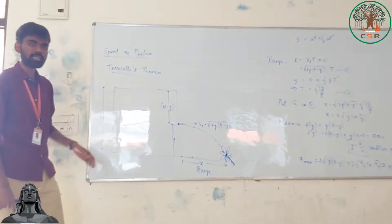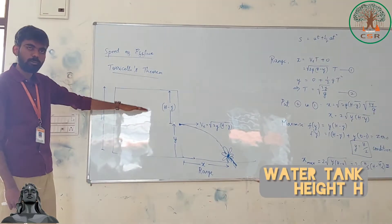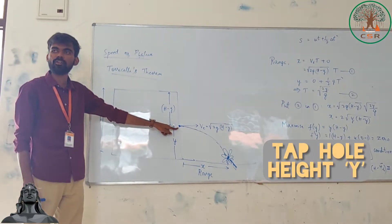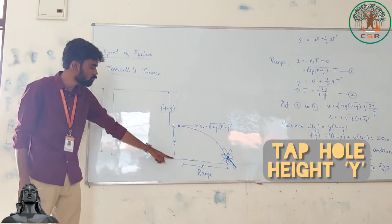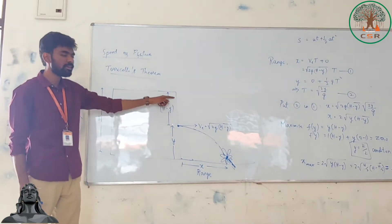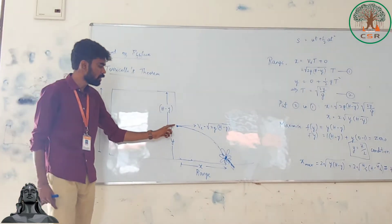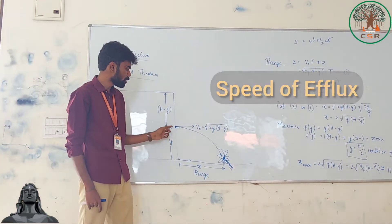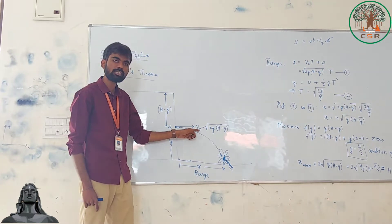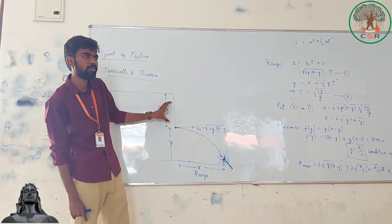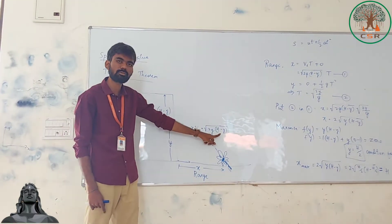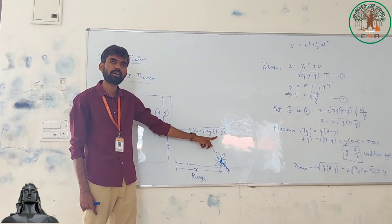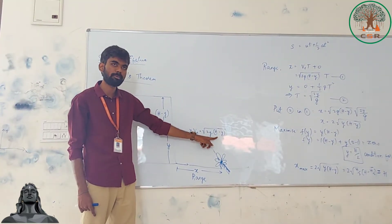The mathematical derivation: consider a water tank of height h and a hole made at a random variable height y from the bottom, so the remaining height above the hole is h minus y. The speed of efflux according to Torricelli's theorem is v equal to root of 2g times (h minus y), which is the velocity of water coming out of the tap.